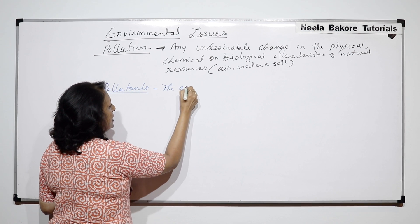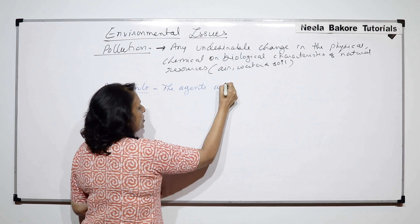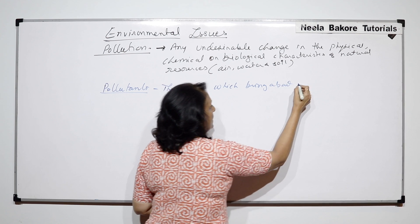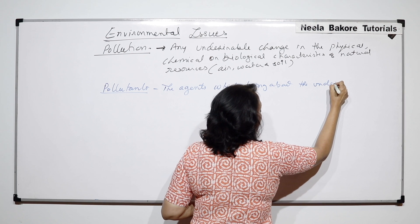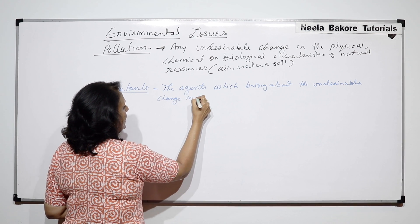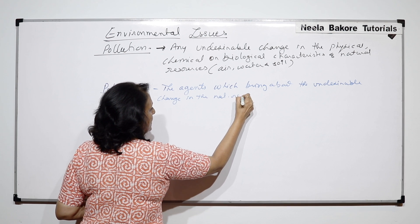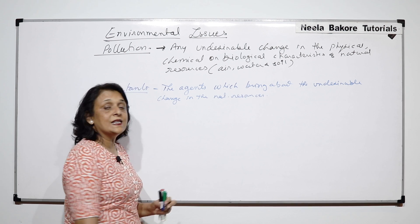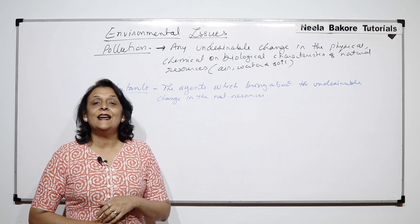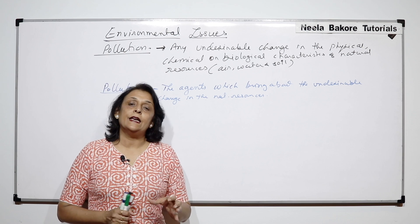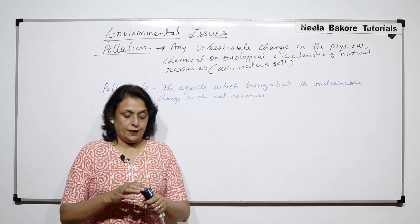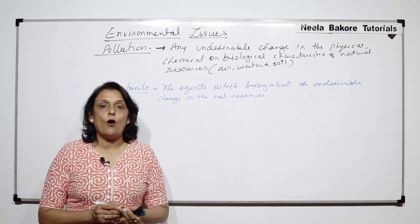The agents which bring about this undesirable change in the natural resources are called pollutants. These are the substances or conditions which impact the environment in a negative manner. Anything which has a negative effect on the environment will be considered as a pollutant. Now we want to understand the various types of pollutants.